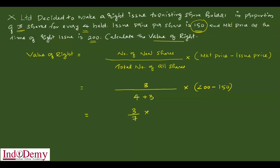Here we will have the value of right: 3 by 7 into 50, which gives you the result of 21.43. This is the value of right.